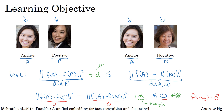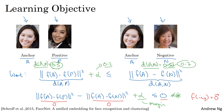To give an example, let's say the margin is set to 0.2. If d(A, P) is equal to 0.5, then you won't be satisfied if d(A, N) was just a little bit bigger, say 0.51. Even though 0.51 is bigger than 0.5, that's not good enough. We want d(A, N) to be much bigger than d(A, P) — in particular, at least 0.7 or higher. To achieve this gap of at least 0.2, you could either push d(A, N) up or push d(A, P) down so that there is at least a gap of alpha = 0.2 between the anchor-positive distance and the anchor-negative distance.